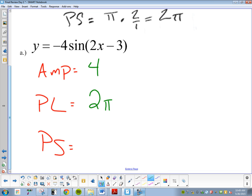How do you know that the period length is going to change? There's a number in front of the x. What do I need to do with this problem? Multiply by the reciprocal of whatever's in front of your x. So I'm going to get two pi times one half. What's my period length going to be? The period length is pi.